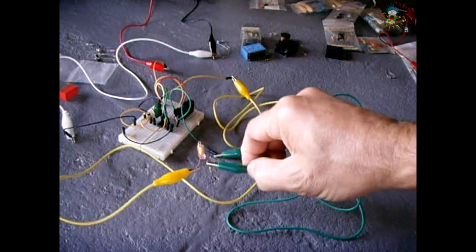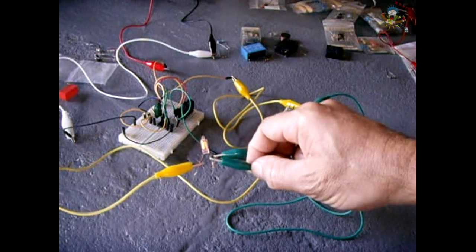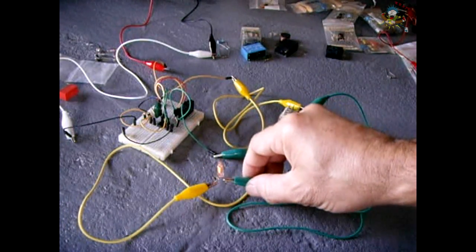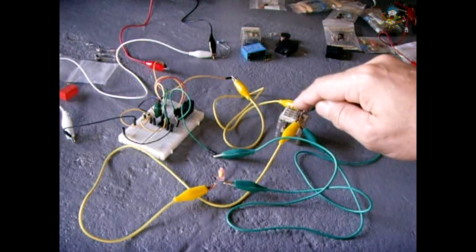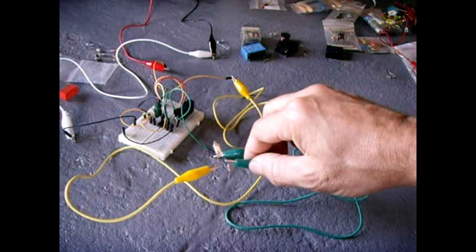Look at that. That's just back EMF you're looking at coming off of this coil right here. Now, if I touch the diode from the positive of this relay coil to ground, then you will not see any of this high voltage. It will be gone.